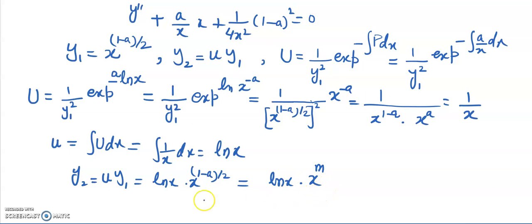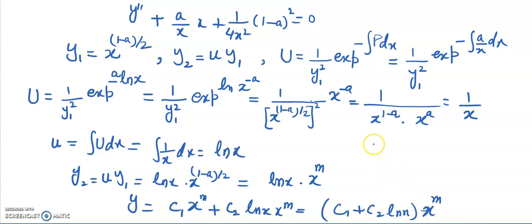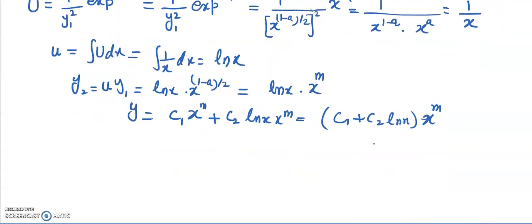So the general solution is y = c₁·x^m + c₂·ln(x)·x^m, or equivalently y = (c₁ + c₂·ln x)·x^m. This is the general solution in the case when there is a double root.